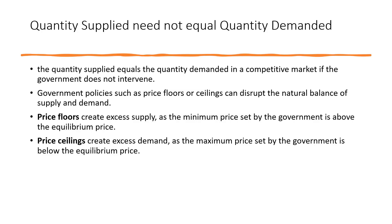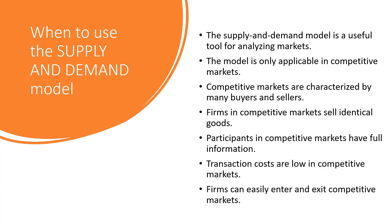Quantity Supplied Need Not Equal Quantity Demanded: The quantity supplied equals the quantity demanded in a competitive market if the government doesn't intervene. Government policies such as price floors or ceilings can disrupt the natural balance of supply and demand. Price floors create excess supply if the minimum price set by the government is above the equilibrium price. Price ceilings create excess demand if the maximum price set by the government is below the equilibrium price.